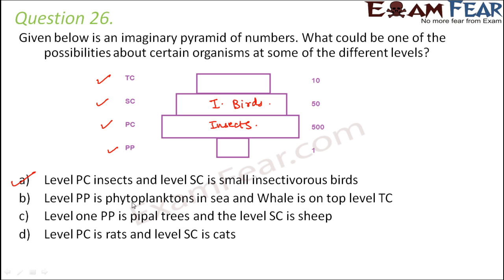Second option: level PP is phytoplanktons — that means the primary producer is phytoplanktons in the sea — and whale is on the top level, that is tertiary consumer. Now if you look at the numbers, there is only one primary producer. That means there is just one phytoplankton and you have 10 whales on the top level, which is not really correct because you need to balance out the numbers. The producers are the autotrophs who produce the food and everybody else is directly or indirectly dependent on them. So logically options B, C, or D are not correct.